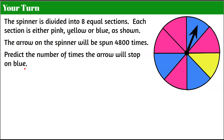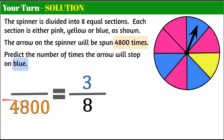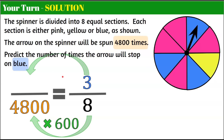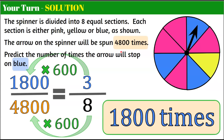Welcome back. We're predicting the number of times the arrow will stop on blue after being spun 4,800 times. There are three blue sections out of eight on our spinner. We learned before that 8 multiplied by 600 is 4,800. So we're going to multiply 3 by 600 to maintain equivalent ratios — 3 times 600 is 1,800. The relative frequency of spinning blue would be 1,800 times out of 4,800.